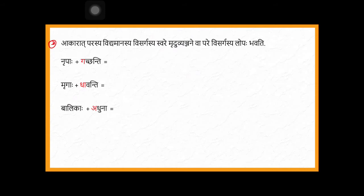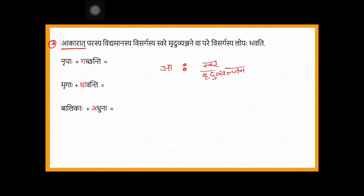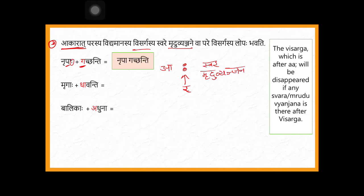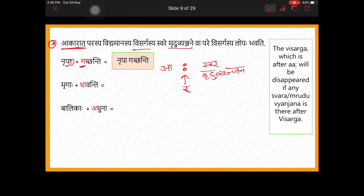Akarasya akarat parasya — if dirga akara is there, and after dirga akara there is visarga, then after visarga if there are swara or mrudhu vyanjana, then this visarga will become repara. See here example: nirpaha — visarga is here. Before visarga, akara. After visarga, mrudhu vyanjana 'ga'. So then that visarga will disappear — visarga will be lopaha.